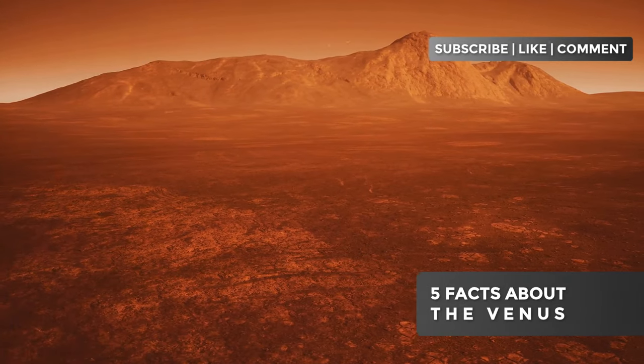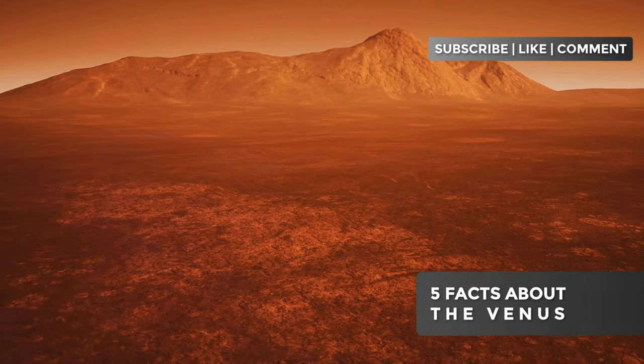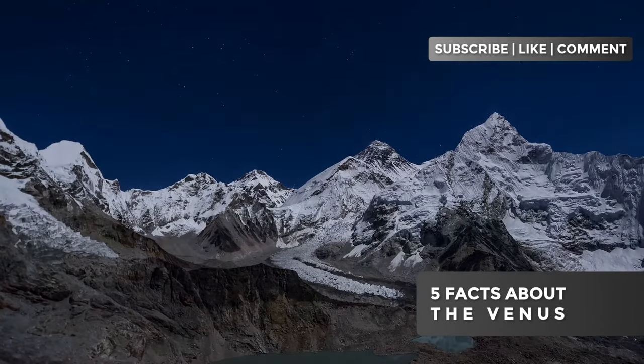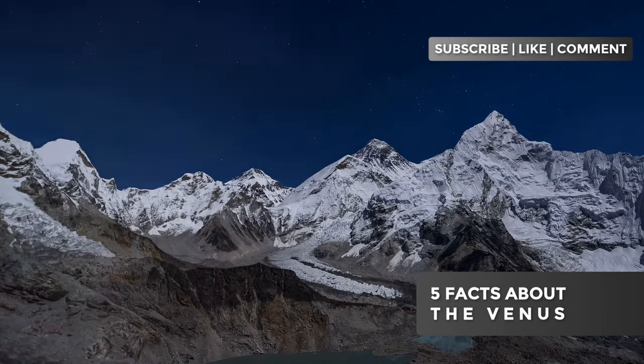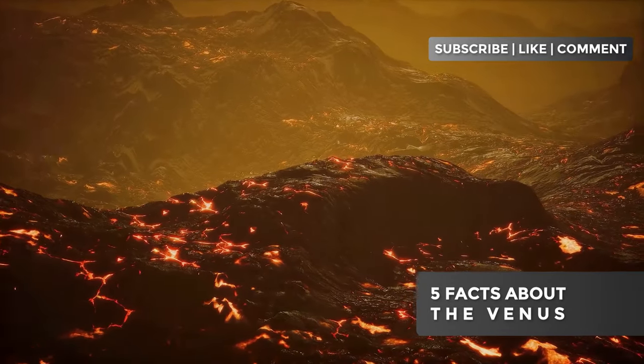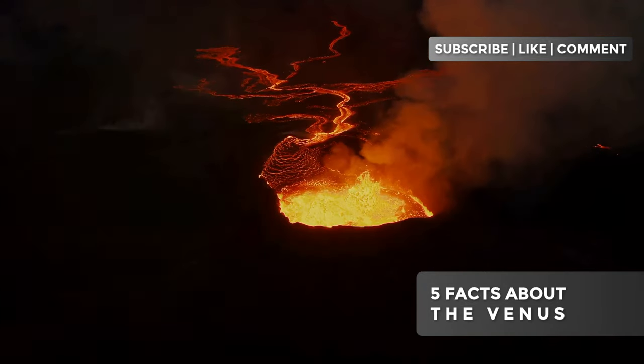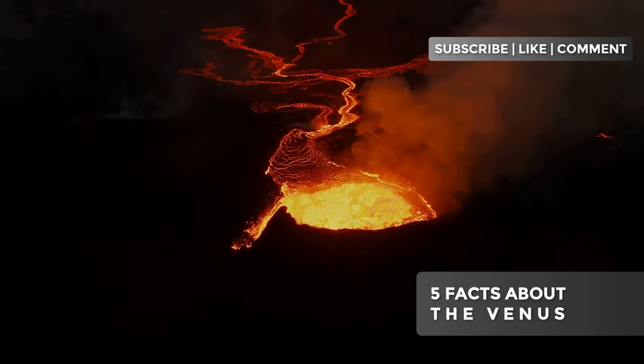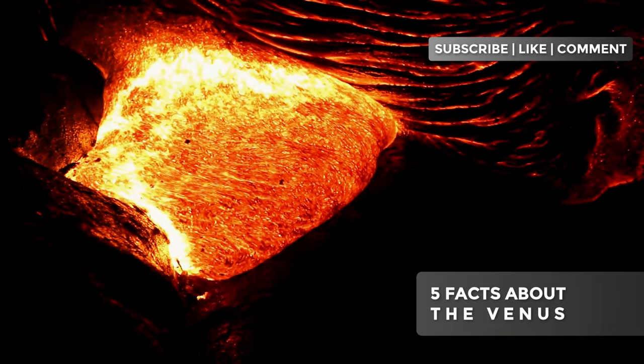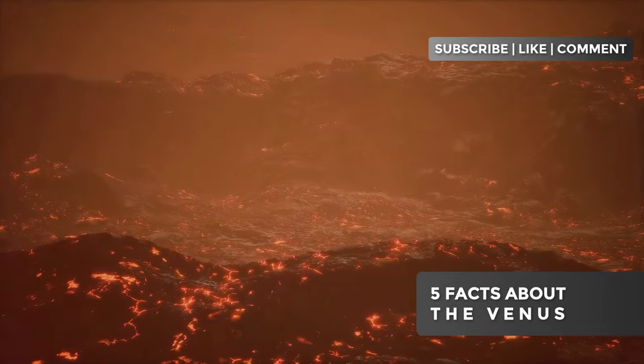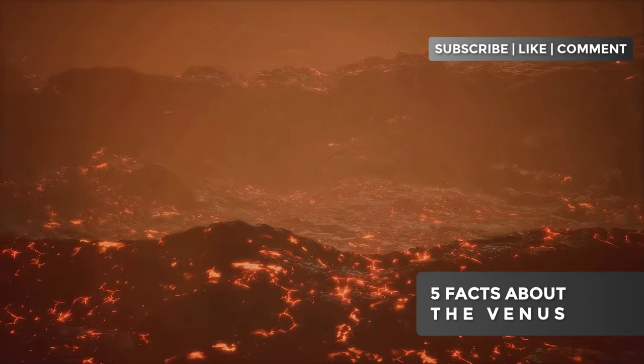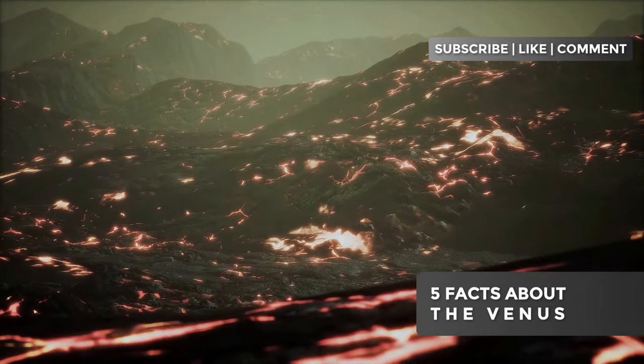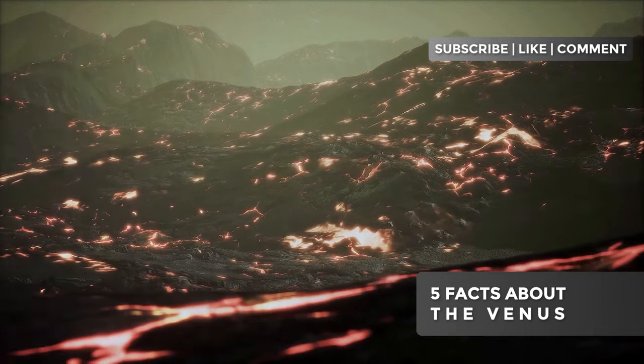One of Venus's most impressive volcanoes is Maat Mons, a colossal structure that rises more than five miles above the planet's average surface. To put that in perspective, it's almost as tall as Mount Everest. Recent observations suggest that Maat Mons and other Venusian volcanoes may have erupted in the recent geological past, possibly even in the last few million years, a blink of an eye in cosmic terms. Volcanism on Venus isn't limited to conventional eruptions. Due to the extreme temperatures on the surface, lava on Venus can have unique properties. Some scientists theorize that certain regions of the planet may have rivers and oceans of molten lava, creating landscapes that defy imagination.